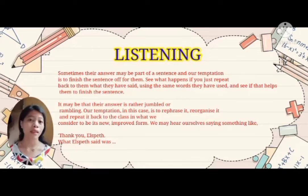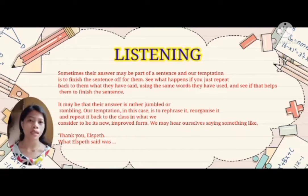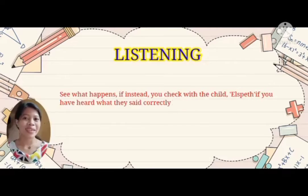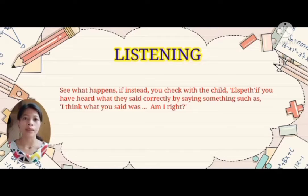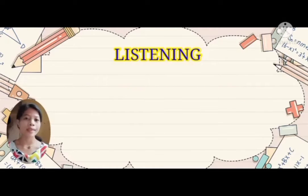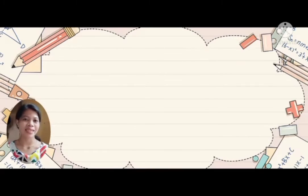See what happens if you just repeat back to them what they have said, using the same words, and see if that helps them finish the sentence. It may be that their answer is jumbled. Our temptation in this case is to rephrase, reorganize, and repeat it back to the class in what we consider its improved form — saying something like: 'Thank you, Elspeth. What Elspeth said was...' Instead, check with the child directly: 'I think what you said was... am I right?' When saying what you thought they said, try to use the same words they used.